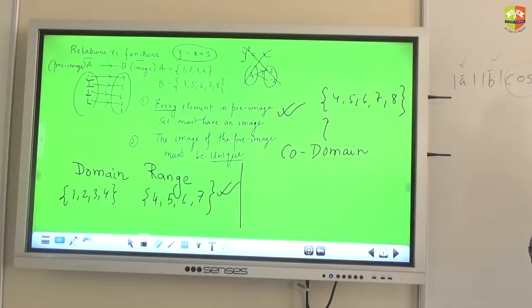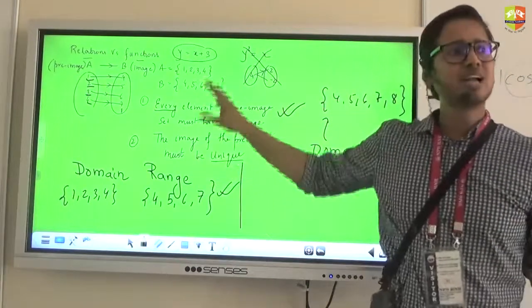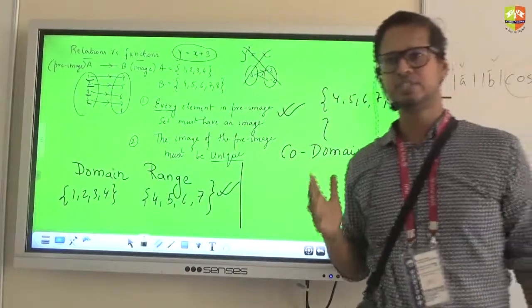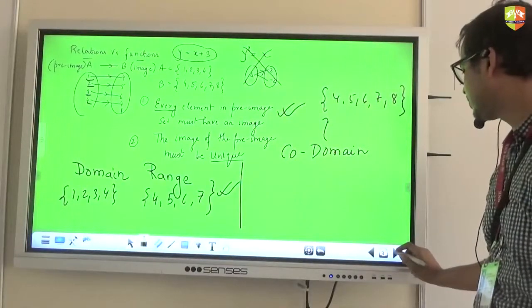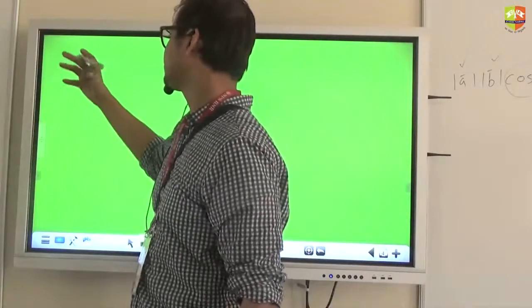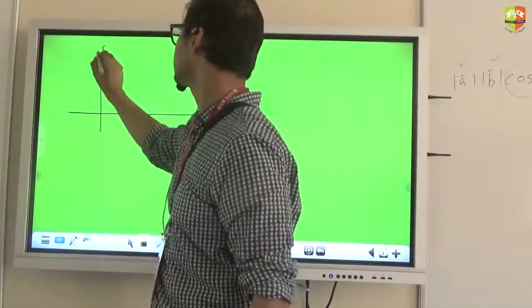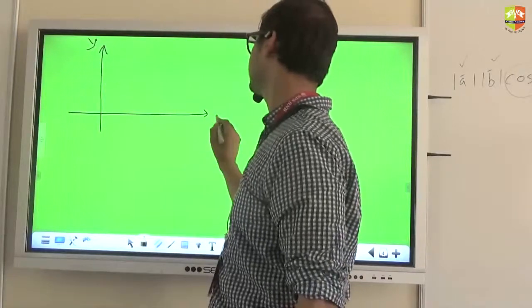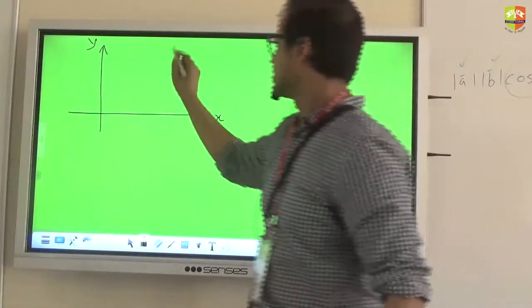Right now what I'm interested in knowing is how graphically you can differentiate between relations and functions. So I have a question for all of you. If you have understood this concept well, I will draw a graph for you. Okay, let's say the graph looks like this.